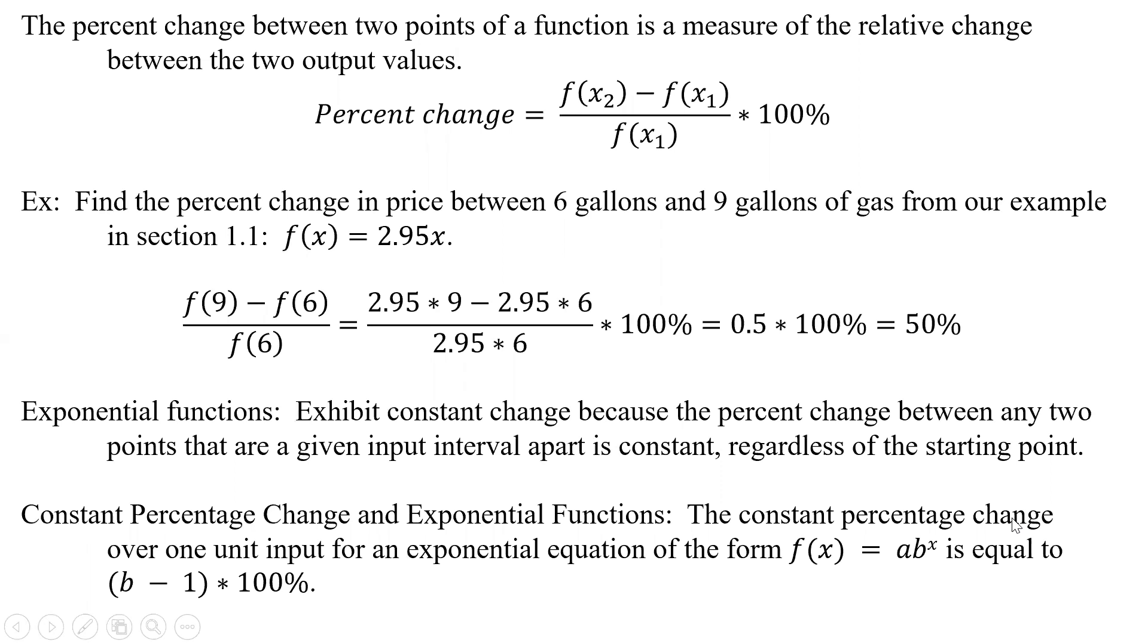Now, if we want to calculate the percent change between two points of a function, it's a measure of the relative change between the two output values. And so what we have to do is look at the output of x2 minus the output of x1 divided by the output of x1 times 100%.